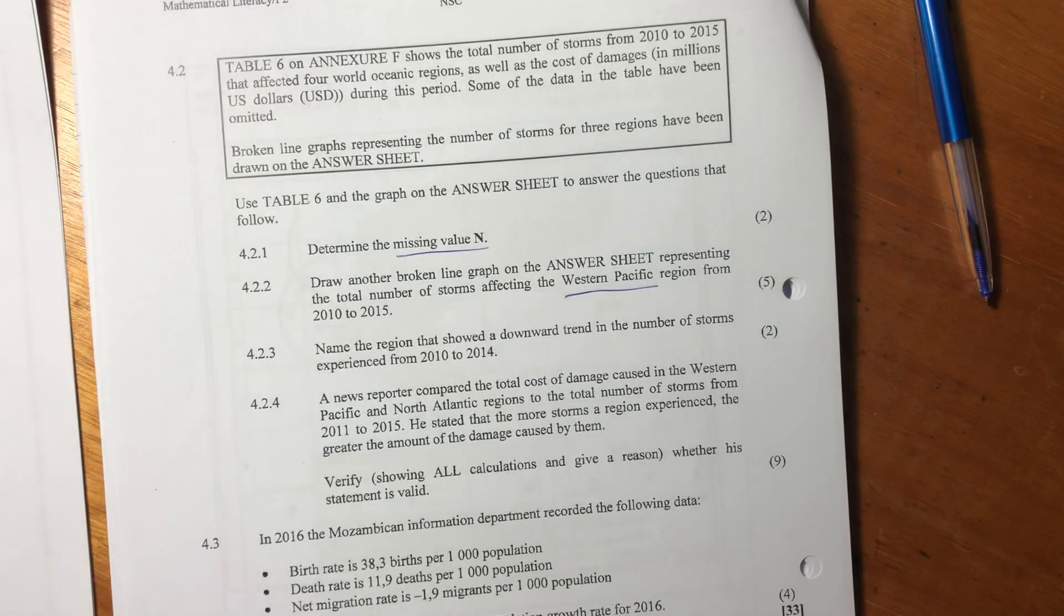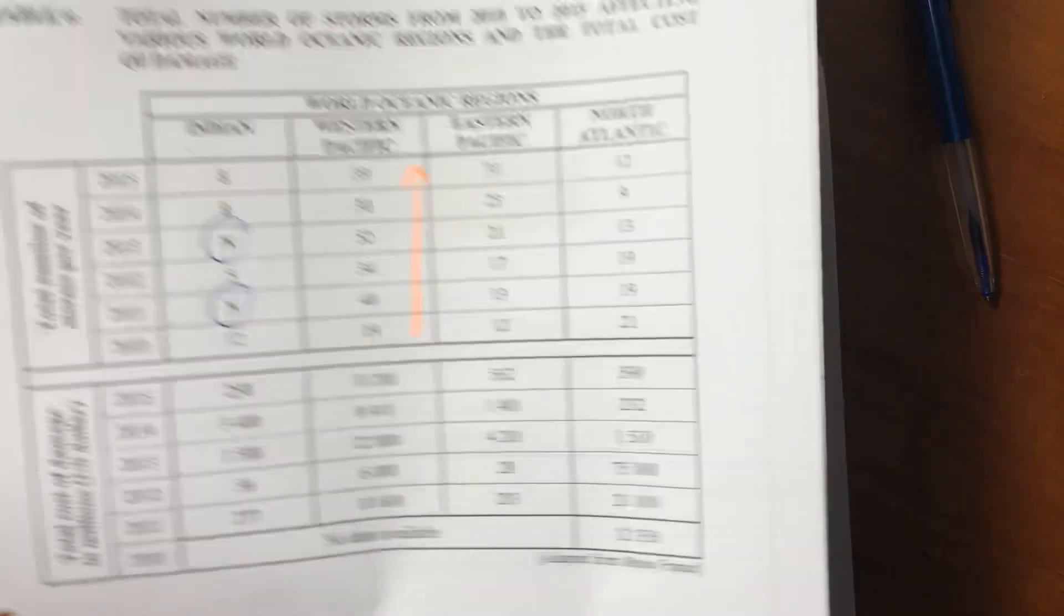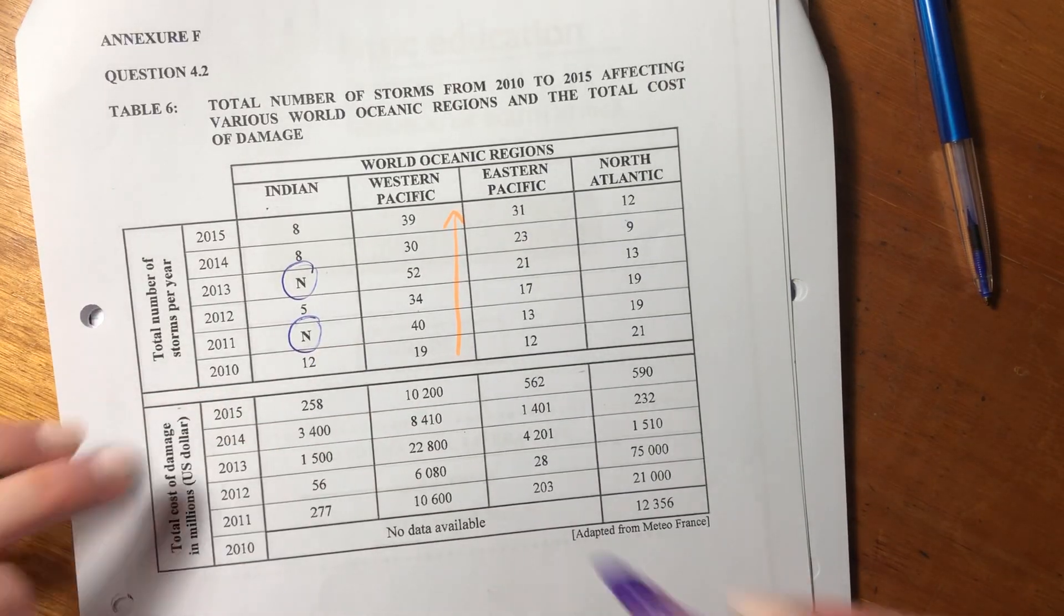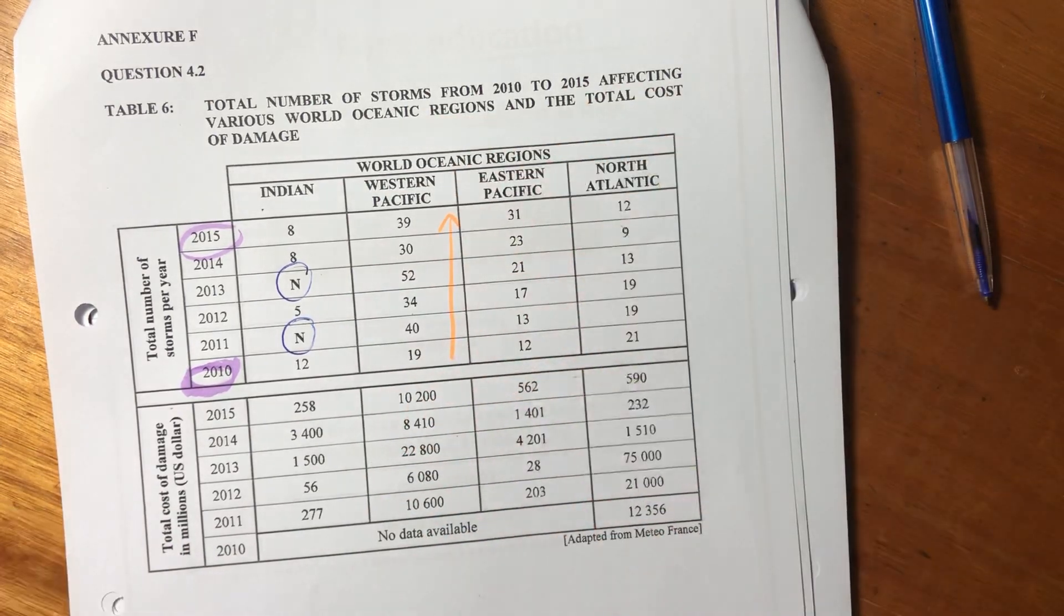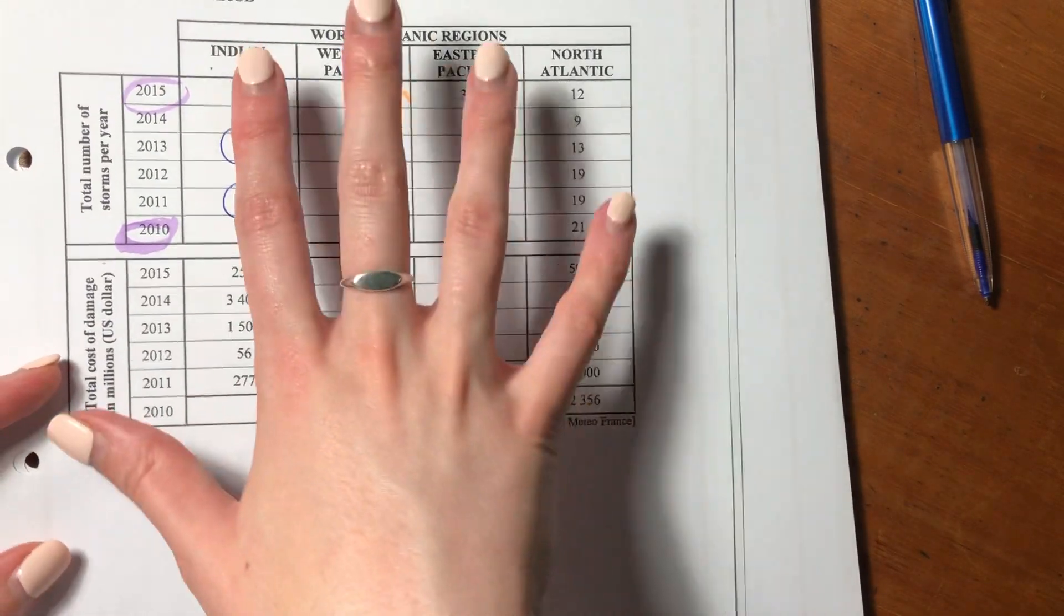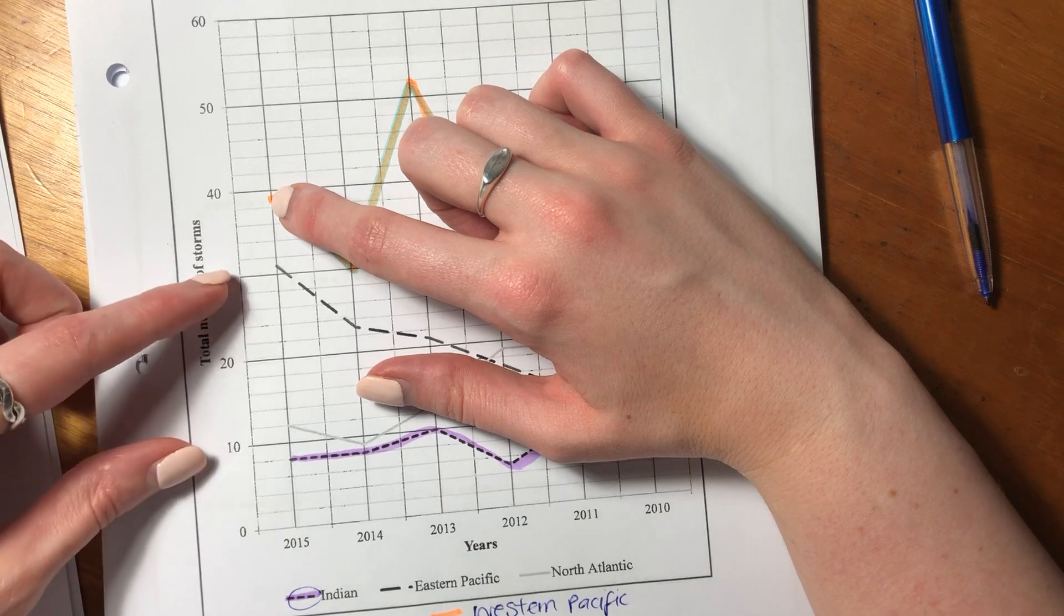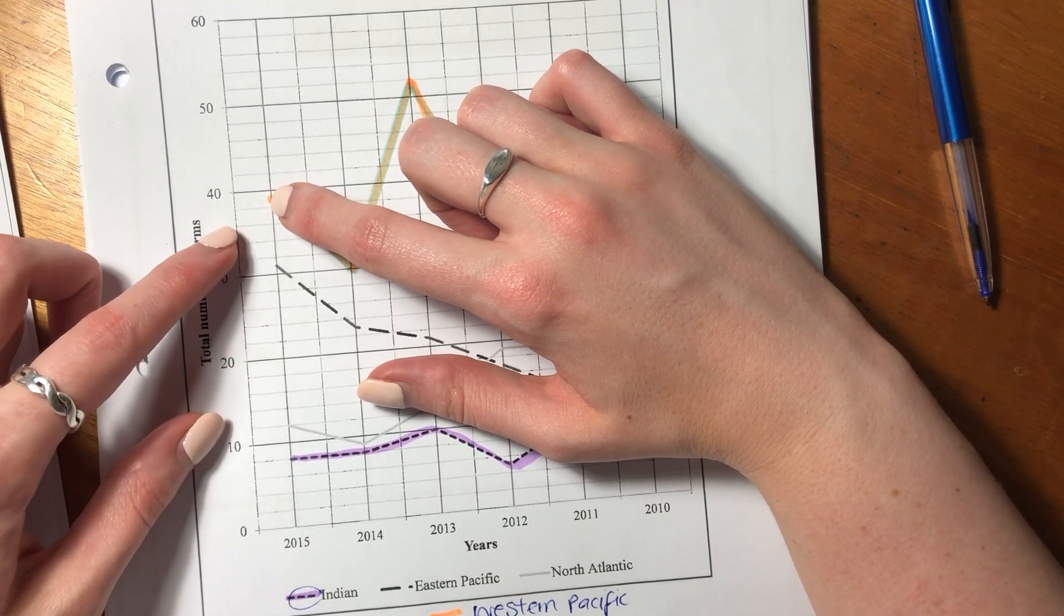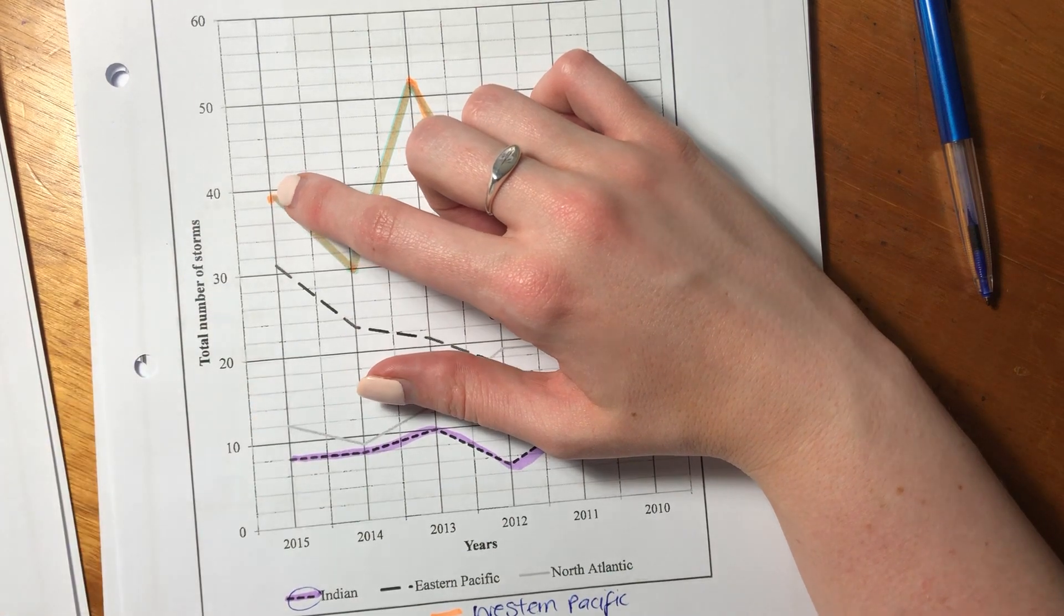Let's now go to 4.2.2. So it says, draw another broken line graph on the answer sheet representing the total number of storms affecting the Western Pacific region from 2010 to 2015. So we see the number of storms here for the Western Pacific. Importantly, we see that 2010 is at the bottom and 2015 is the top. Generally, it's the other way around with data, so it's important to note this. But in the graph that we're graphing, they've done it from 2015 to 2010, in the same order as we have in the set of data in this table. So 2015 is 39, just under 40. What's important for you to note is each of these smaller segments here is two. So between 30 and 40, there are five different segments, and each of them represent two. So I plotted 39.